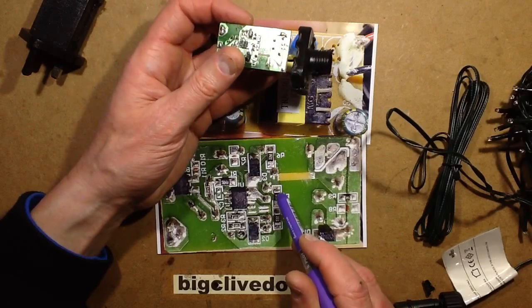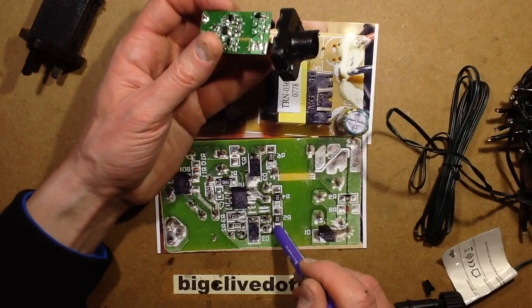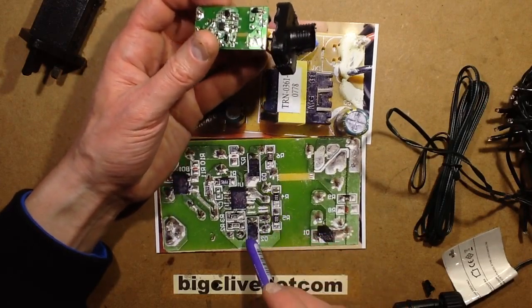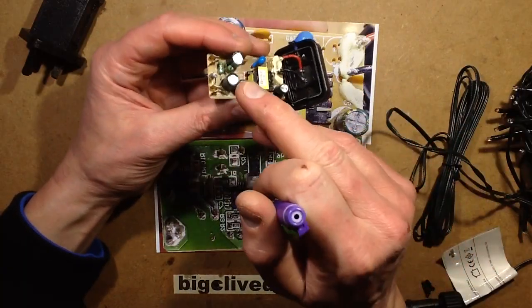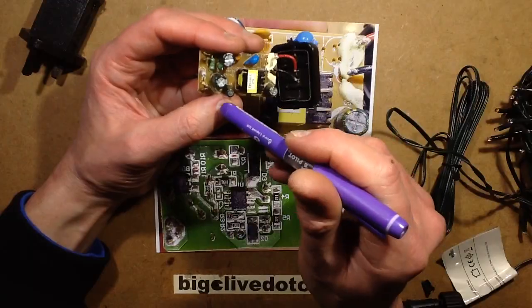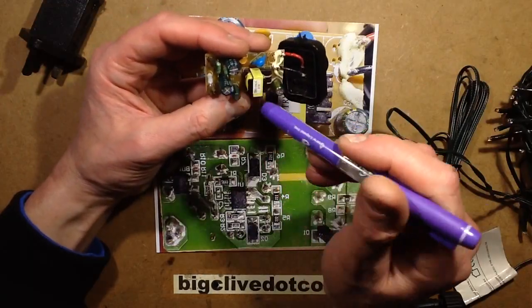These two resistors, 1.5M2 in series, also they're the ones that slowly trickle charge. When you turn it on, there's a slight delay and it's basically trickle charging this capacitor here until the chip can run and then it'll start generating its own power supply.